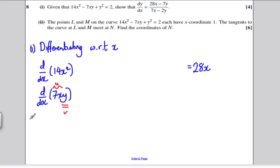So you take your u which is 7x and multiply it by the differential of v, and d/dx of y is simply dy/dx. Plus v which is y and the differential of 7x which is 7. That's simply equal to 7x dy/dx plus 7y.